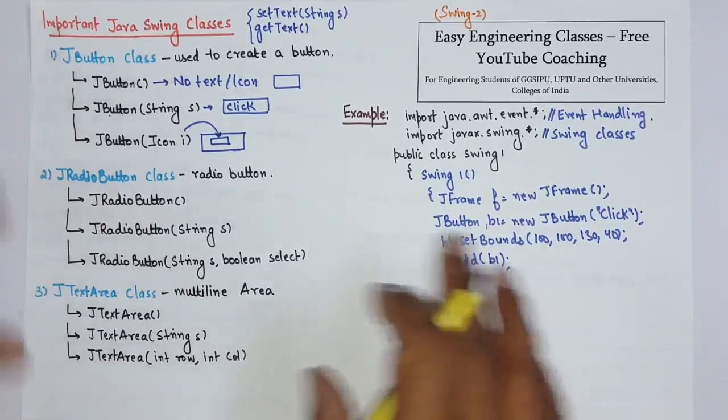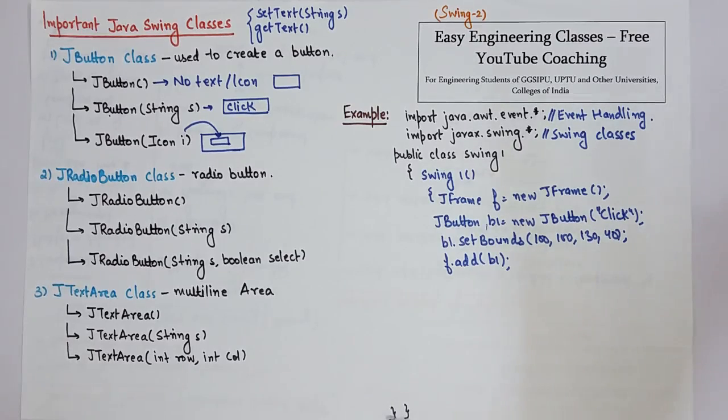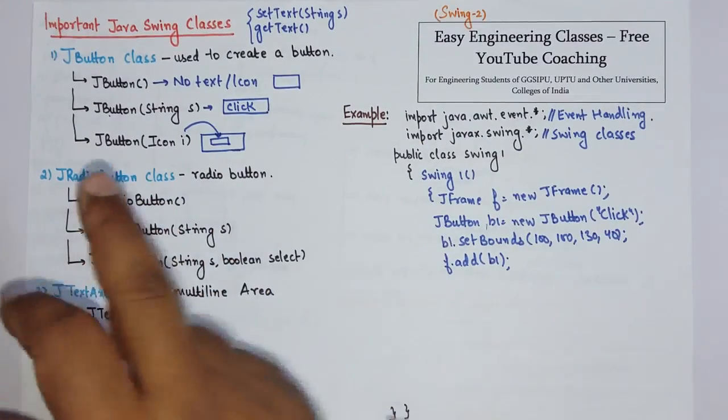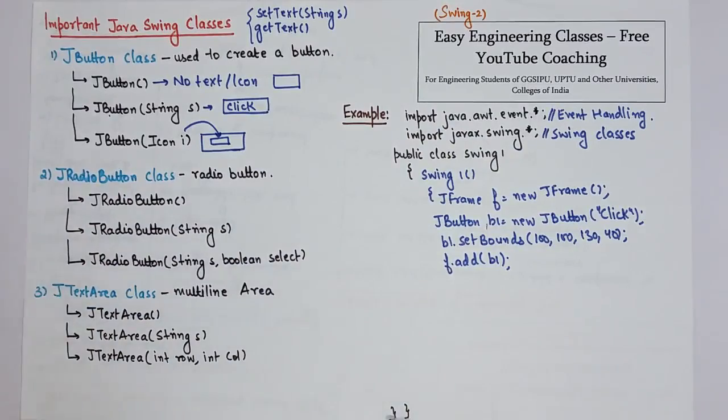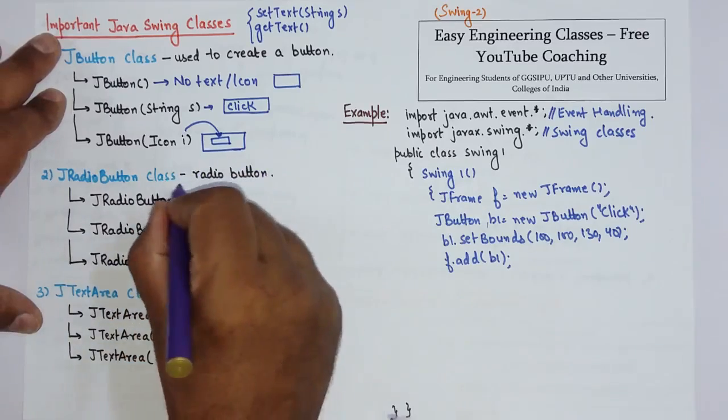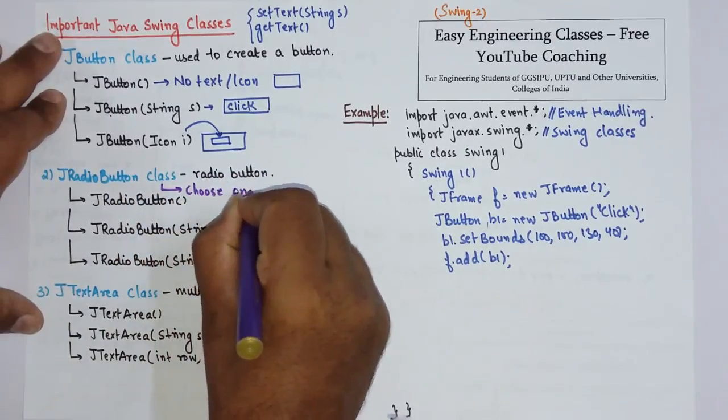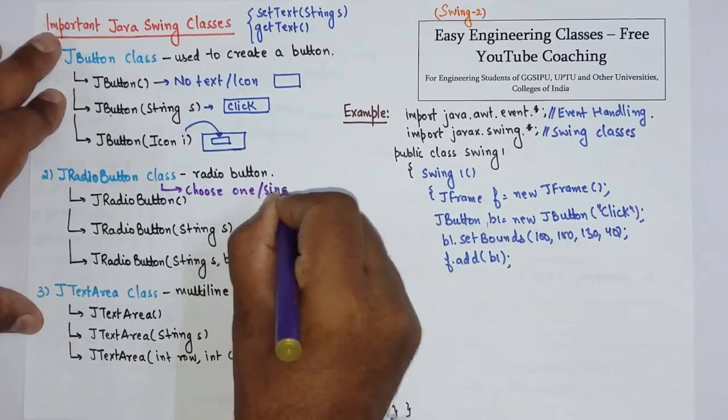Now next is JRadioButton class. It is used to choose only one option from multiple options, so JRadioButton is used to choose one or single from multiple options.